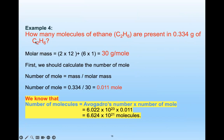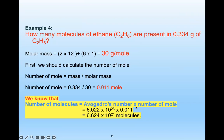Example: how many molecules of ethane (C2H6) are present in 0.3 grams? First calculate molar mass: 2 × 12 (carbon) + 6 × 1 (hydrogen) = 30 g/mol. Then number of moles = mass / molar mass = 0.3 / 30. Finally, number of molecules = Avogadro's number × number of moles.